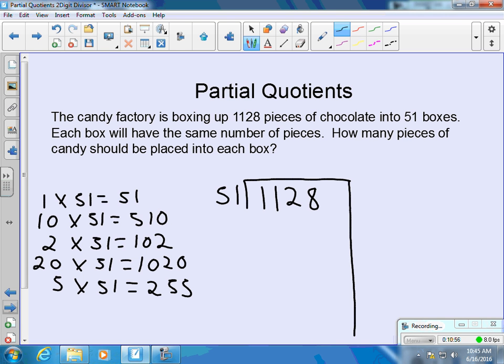So our dividend is 1,128. We look at our products and our cluster problem. You can see 1,020 is really close. So we can use 20 groups of 51 is 1,020. So we've used 1,020 pieces of our candy and we have 108 pieces left still to put into boxes.